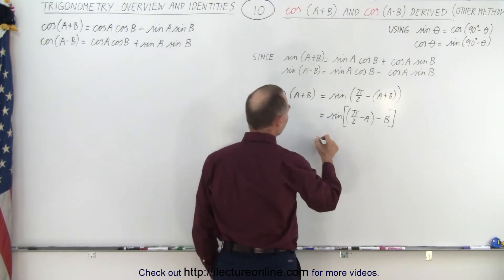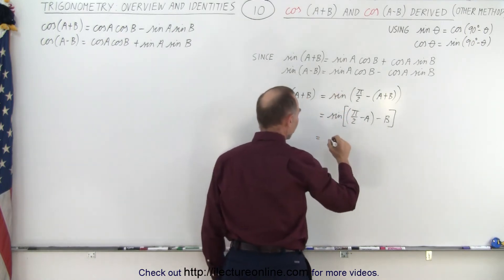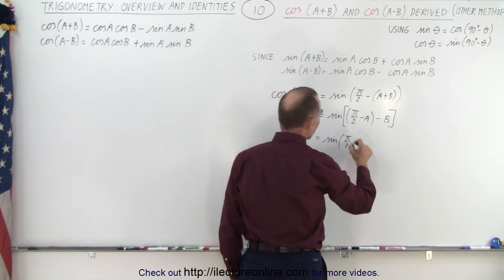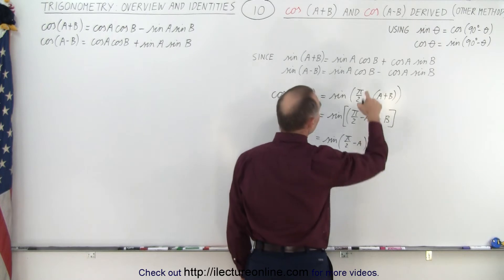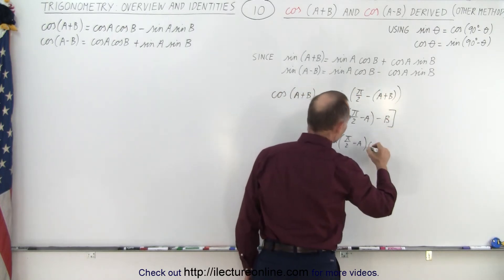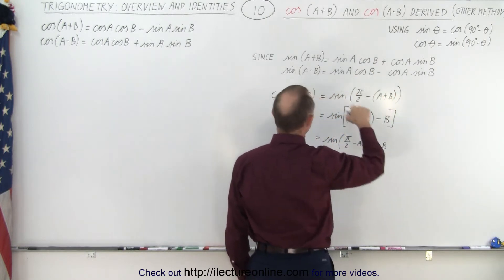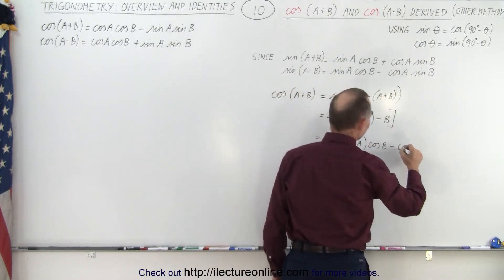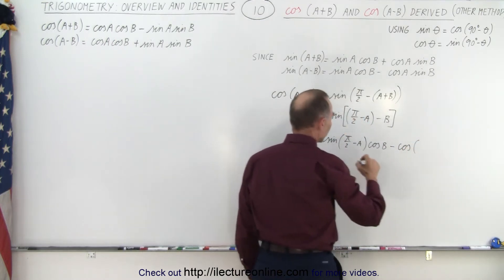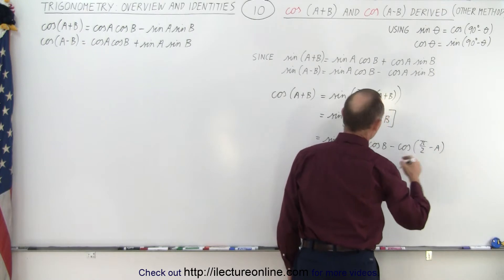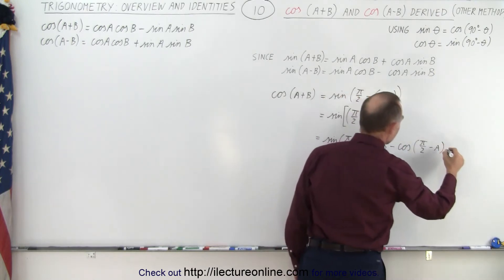Since this is the sine of the difference of two angles, it is equal to the sine of the first angle — the sine of (pi over 2 minus a) — times the cosine of the second angle, cosine of b, minus, because we're subtracting the angle, the cosine of the first angle, which is (pi over 2 minus a), times the sine of b.